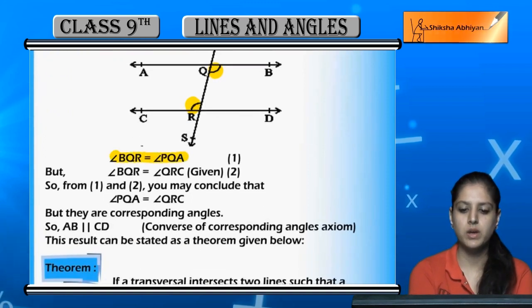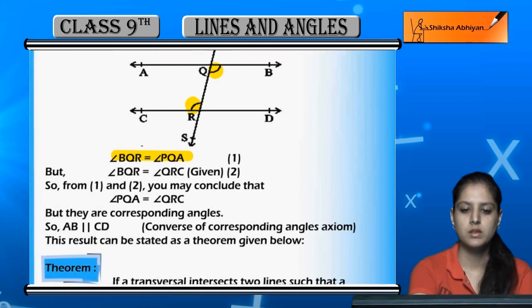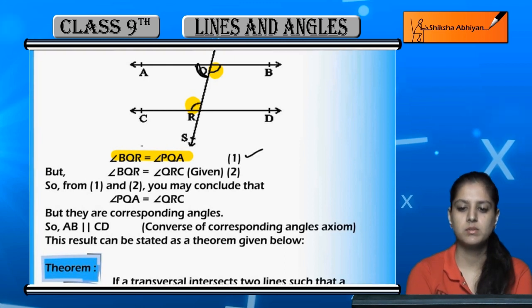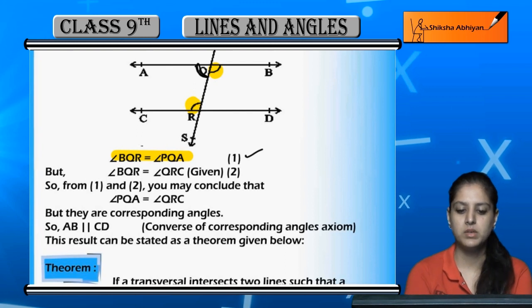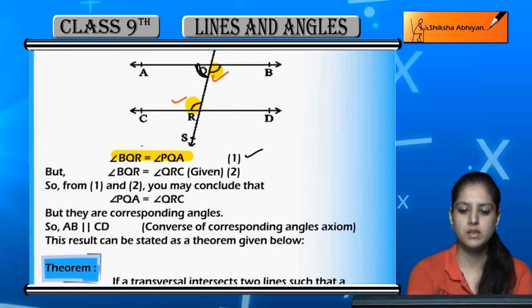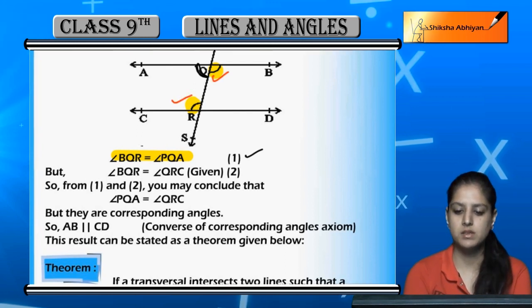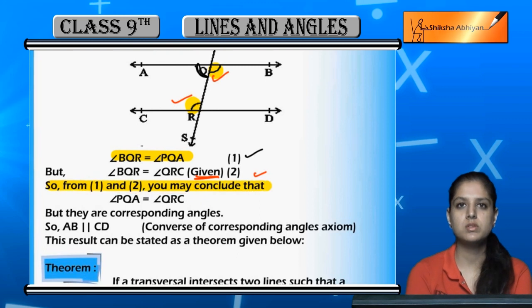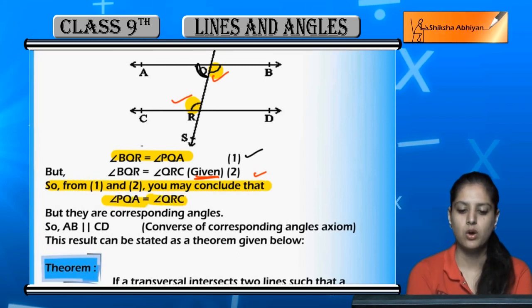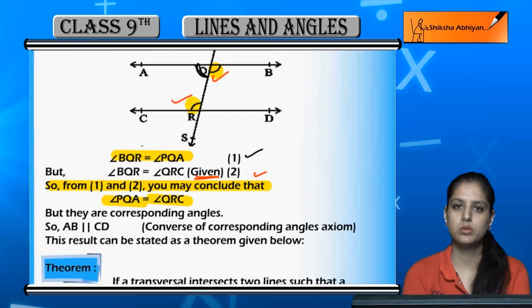Angle BQR is equal to angle PQA. This is equation number 1. Similarly, angle BQR is equal to angle QRC. This is given. So from both of these equations, PQA and QRC are both equal - these two angles.